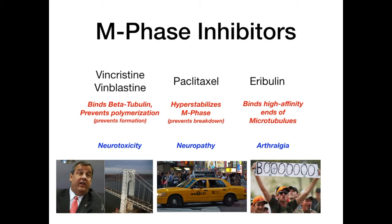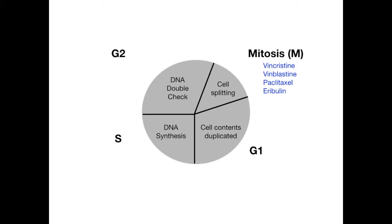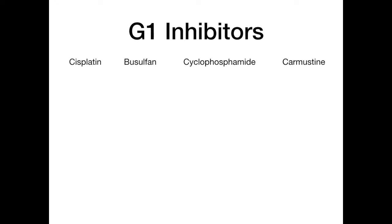Those are the four drugs that inhibit mitosis. Now let's talk about drugs that inhibit the G1 phase: cisplatin, busulfan, cyclophosphamide, and the nitrosourea carmustine. These are our G1 phase inhibitors. The mechanisms are straightforward — they all cross-link DNA, which is why they're fairly easy to group.